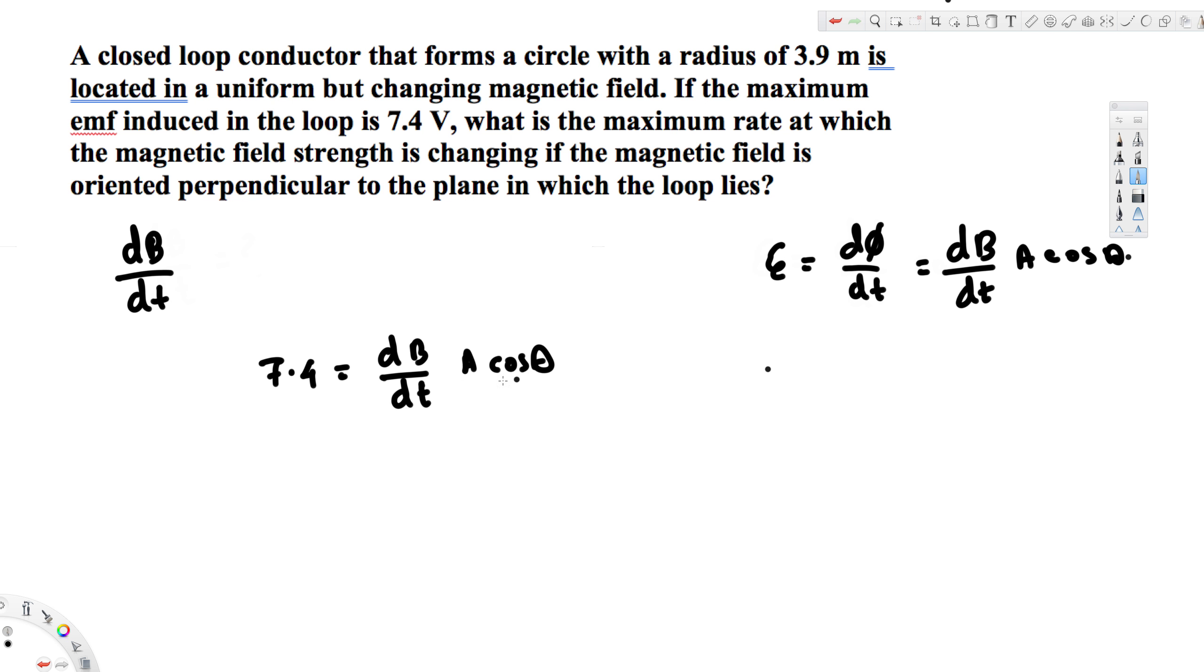If I rearrange this equation, dB/dt is equivalent to 7.4 divided by A. Since we're dealing with a loop, A is going to be the area of the circle.